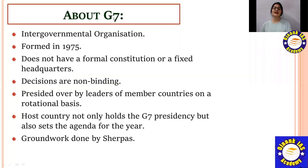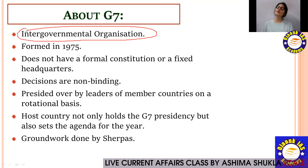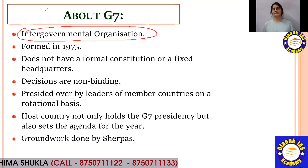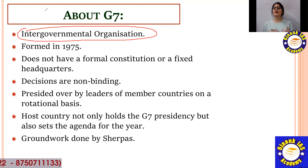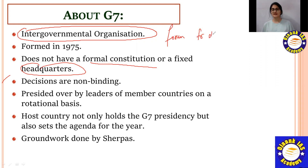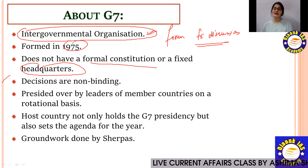Let's talk about what G7 actually is. Group 7 is an intergovernmental organization — meaning countries have formed it themselves. It is not based on a signed declaration or a formal constitution. There is no formal drafting document and there is no headquarters of G7. It is only a forum for discussions, founded in 1975.